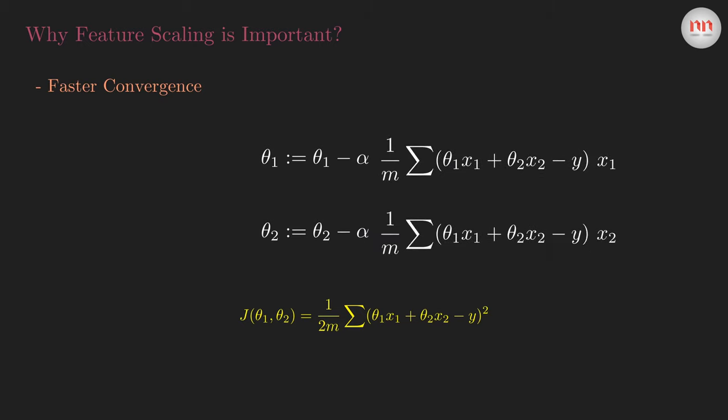Now, let's think of a scenario where we haven't done any feature scaling. Hence, x1 and x2 have vastly different ranges. Let's say, x1 lies between 0 and 1, and the range of x2 is 100 to 1000. So, what do you think will happen during gradient descent?